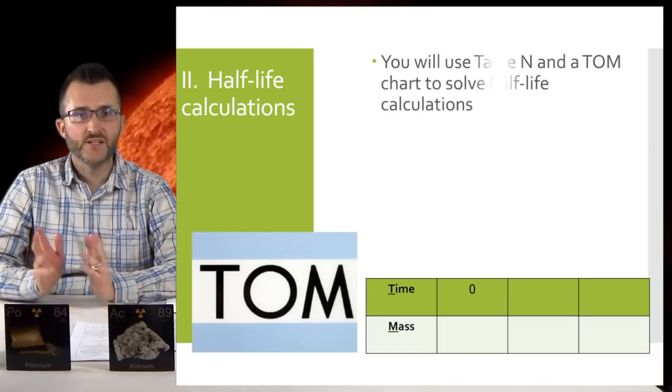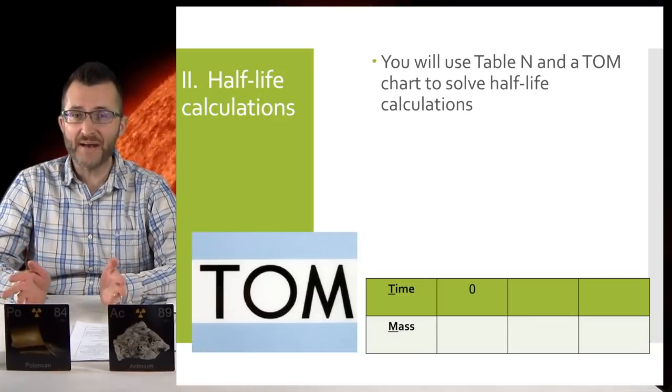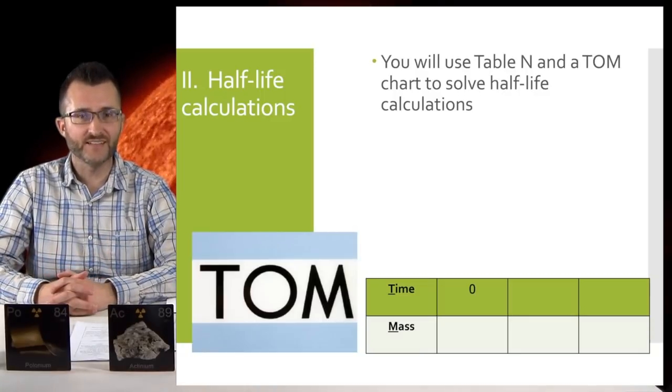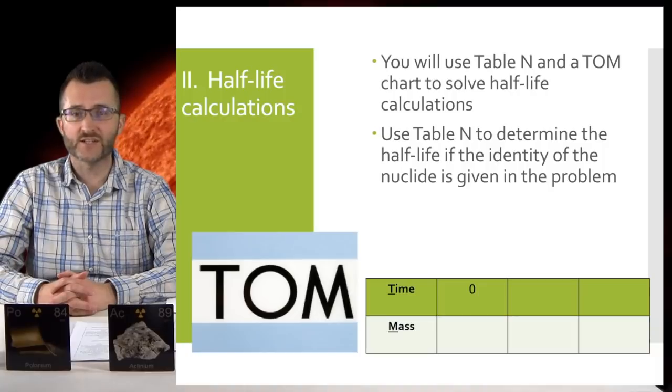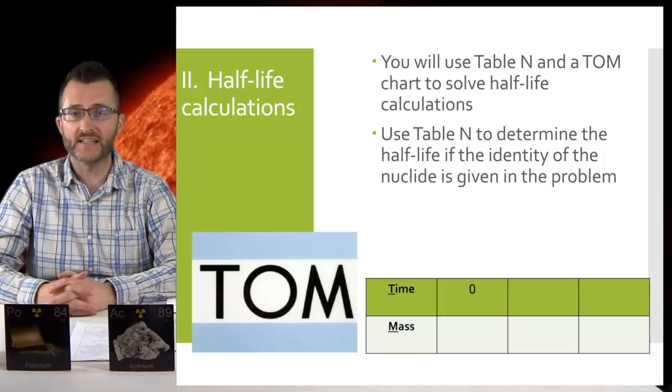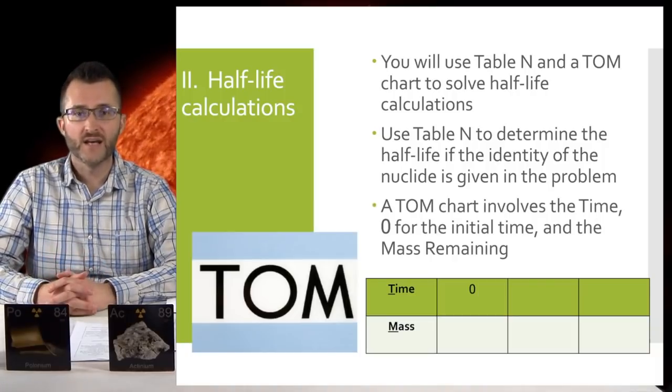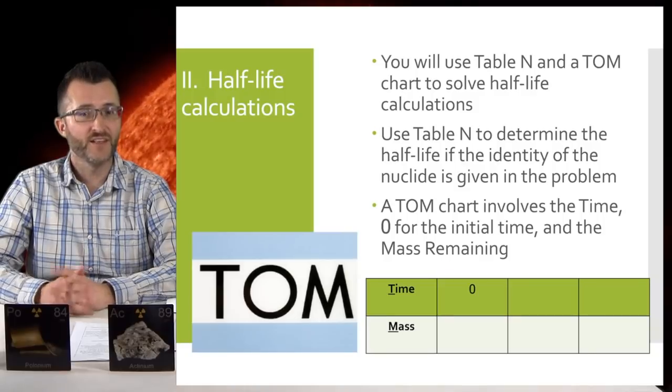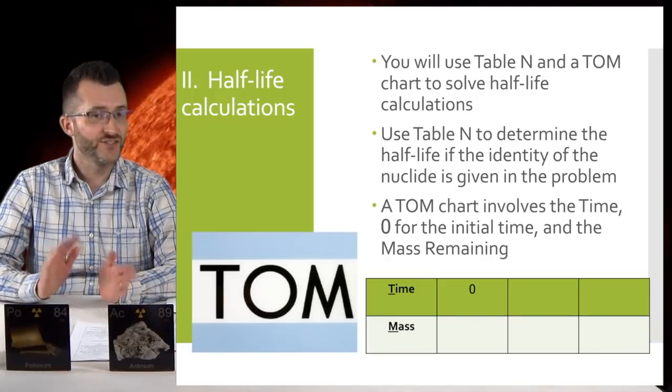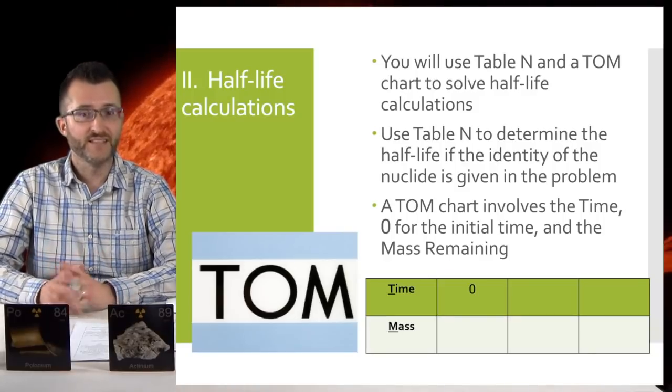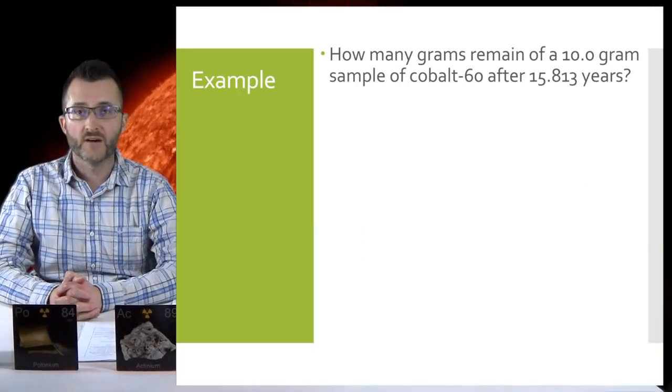Half-life calculations. You will use table N and a time chart to solve half-life calculations. Use table N to determine the half-life if the identity of the nuclide is given in the problem. A time chart involves the time, zero for the initial time, and the mass remaining.